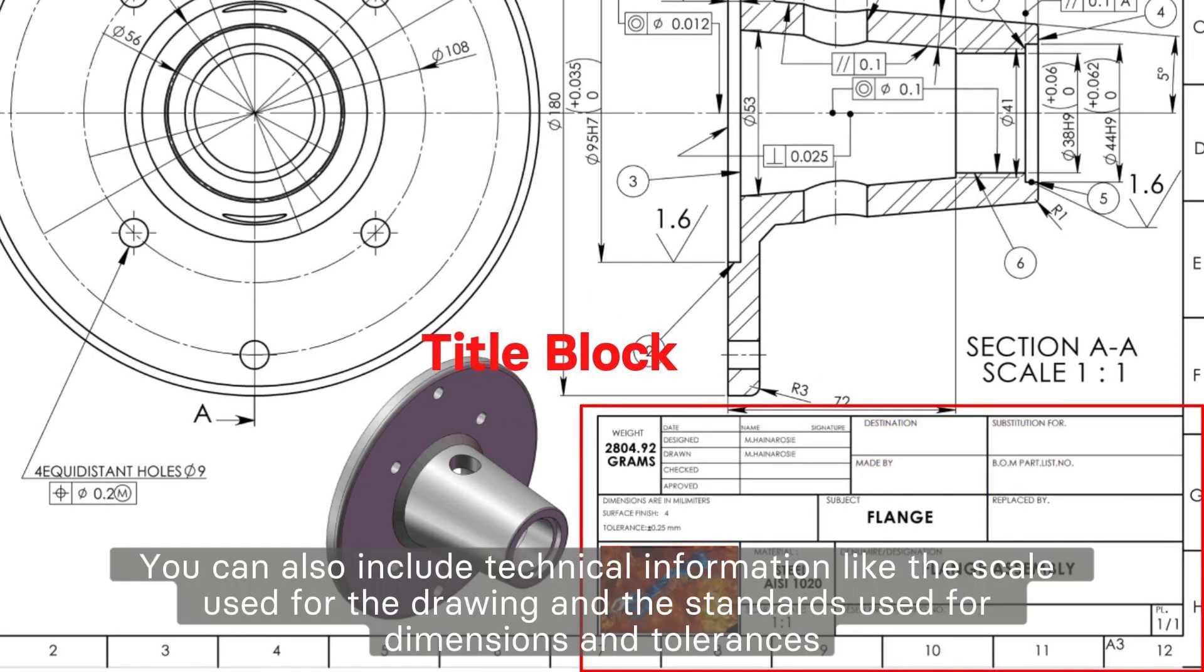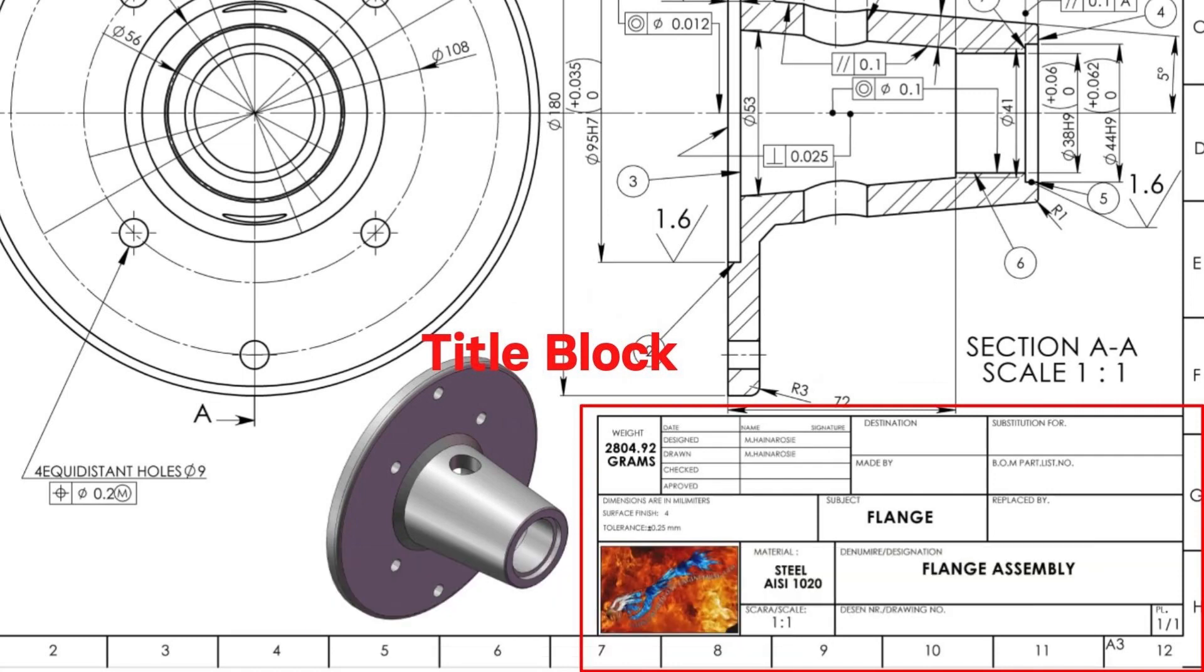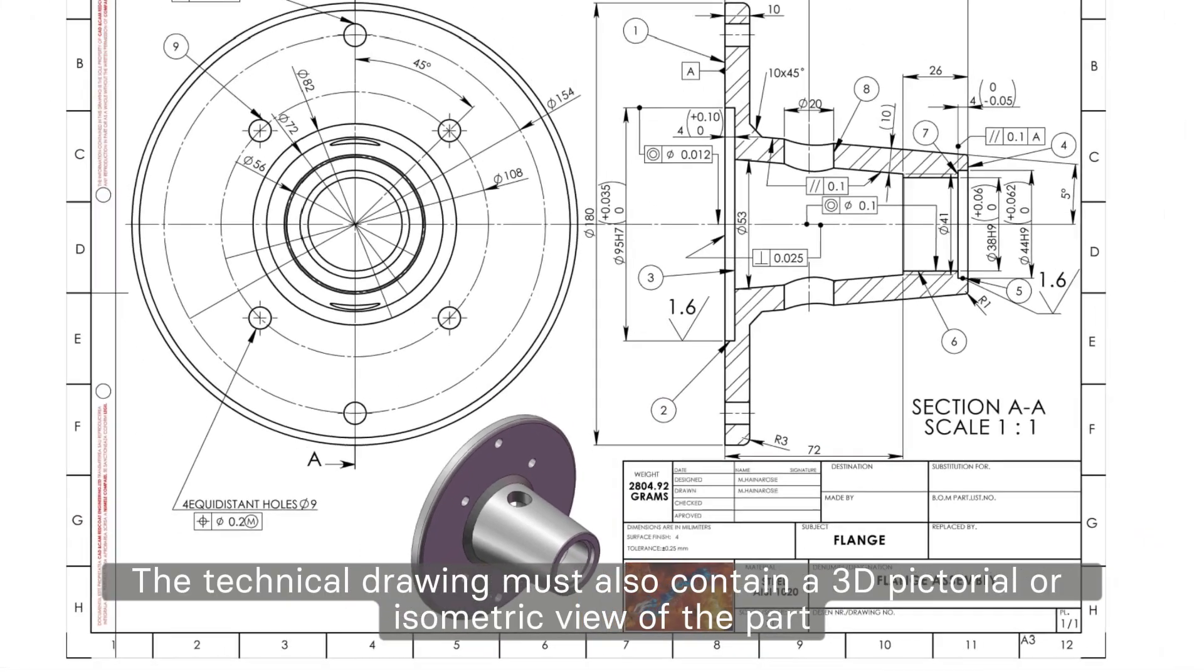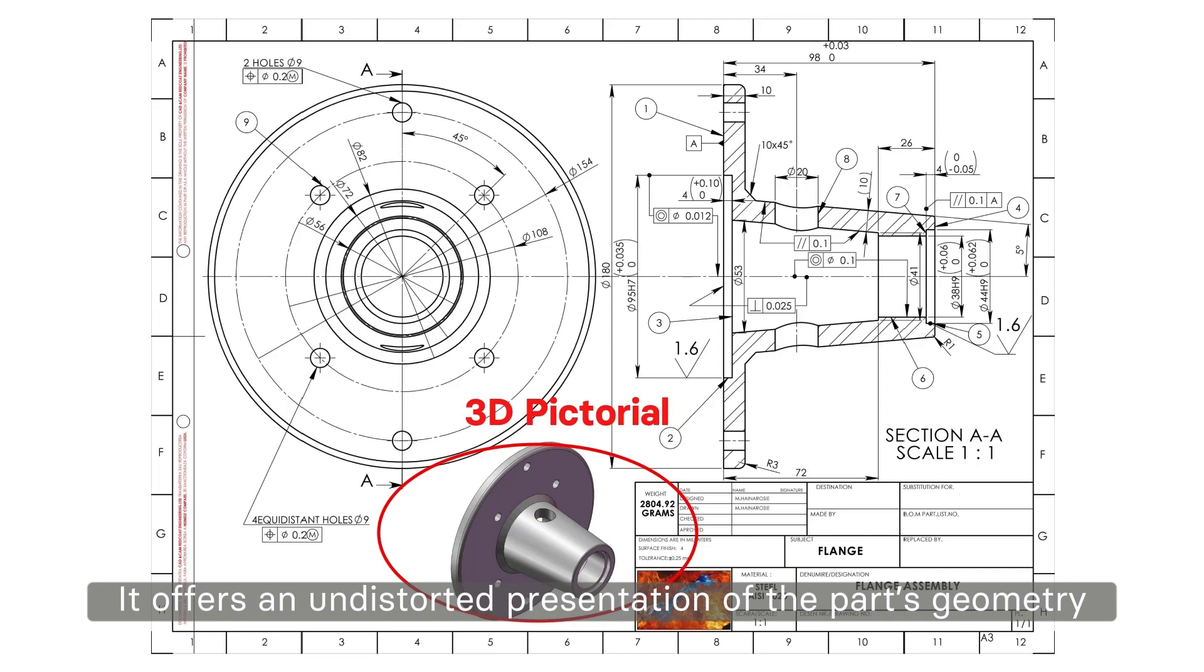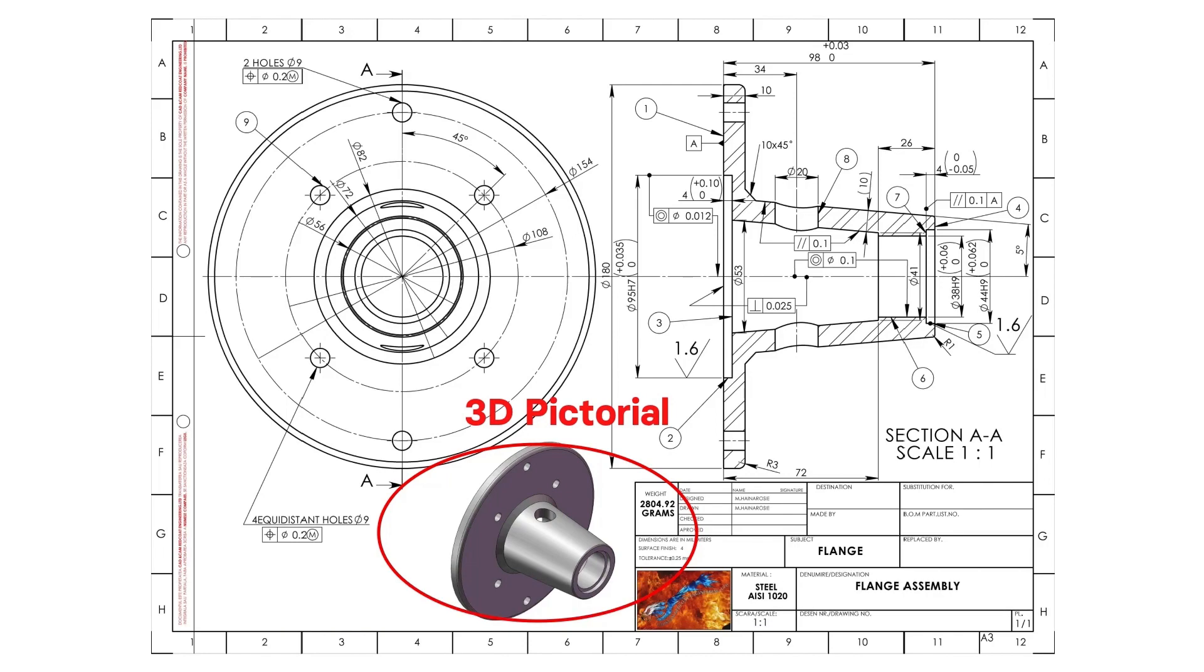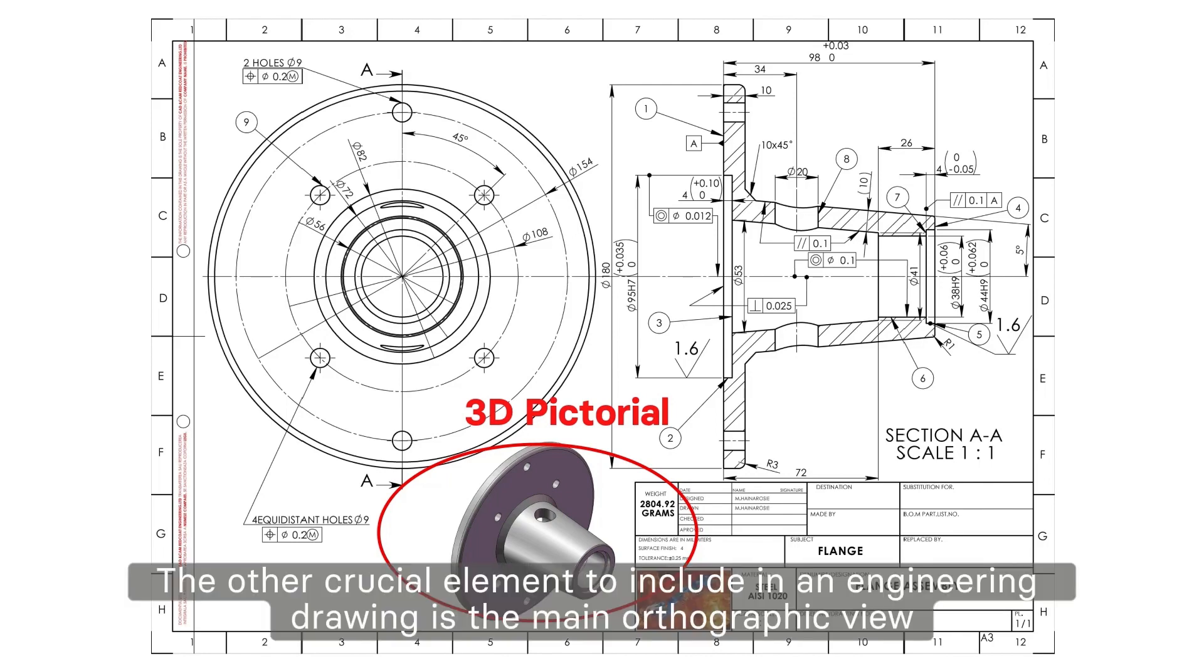You can also include technical information like the scale used for the drawing and the standards used for dimensions and tolerances. The technical drawing must also contain a 3D pictorial or isometric view of the part. It offers an undistorted presentation of the part's geometry, making it easier to understand the drawing at a glance. The other crucial element to include in an engineering drawing